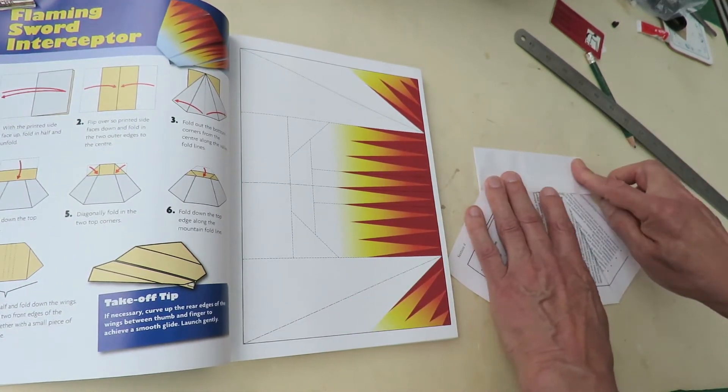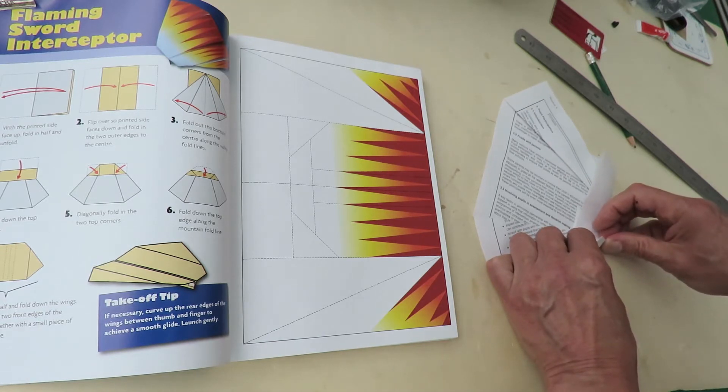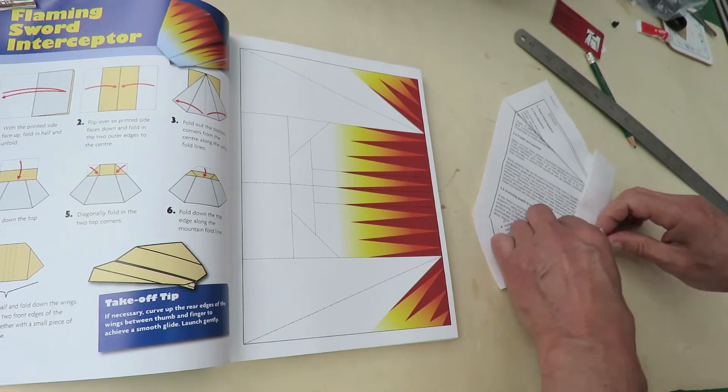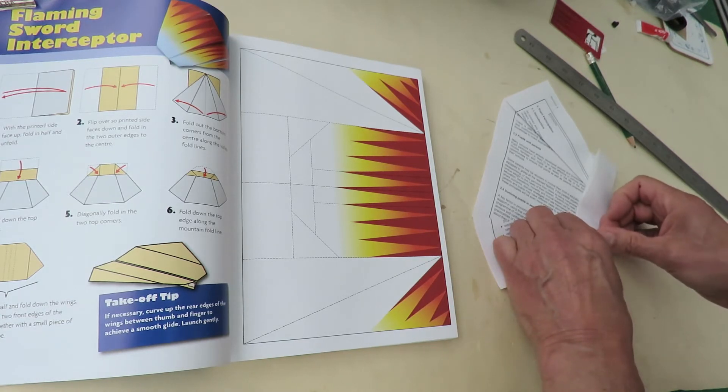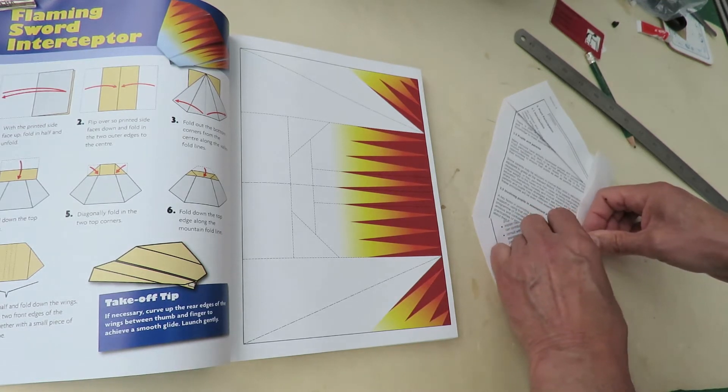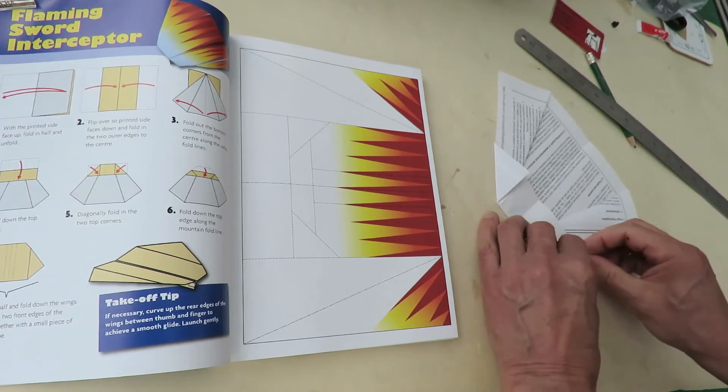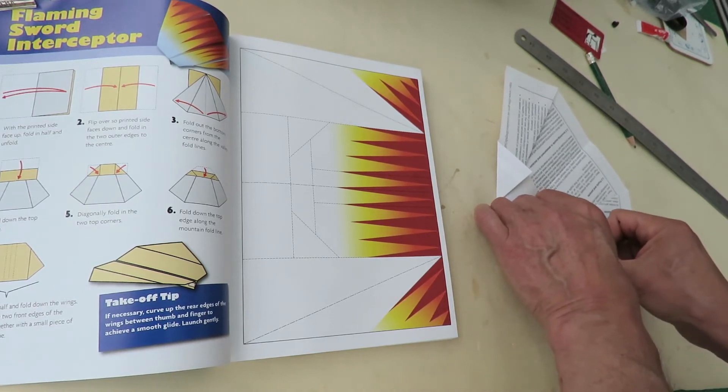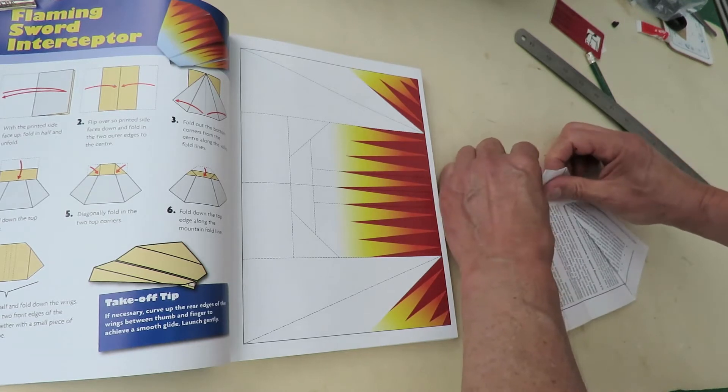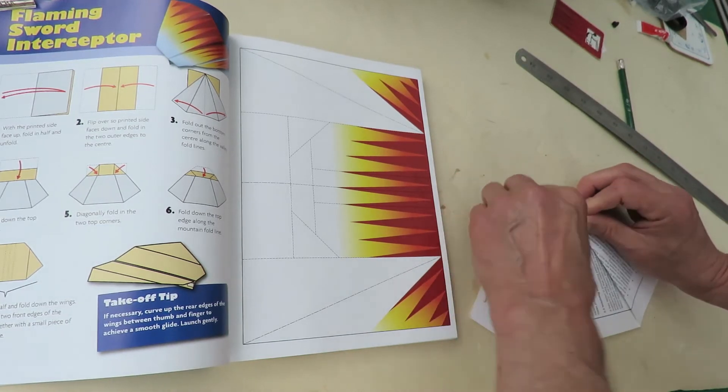Anyway, so we've done that fold. Next, those corners come in. Just trying to check where they come in to. We've got a lot of folds there at the moment.